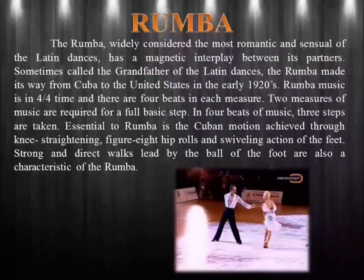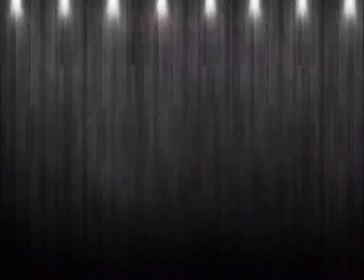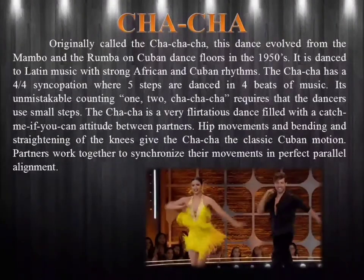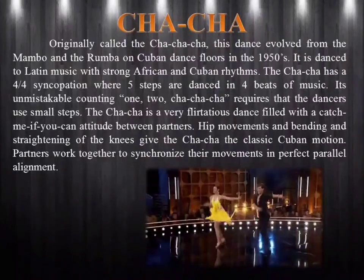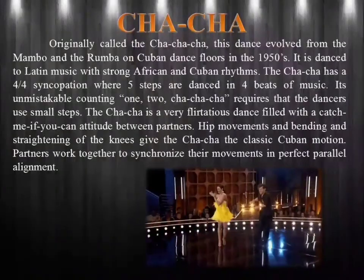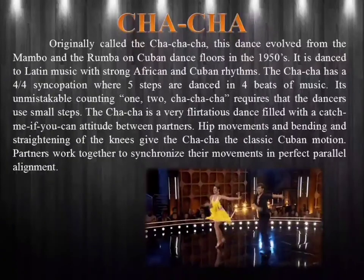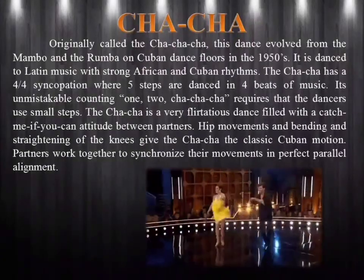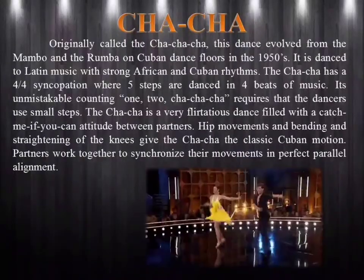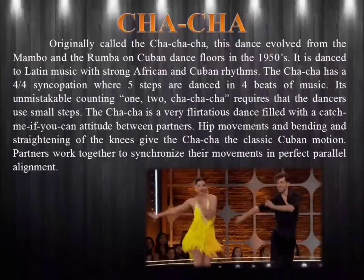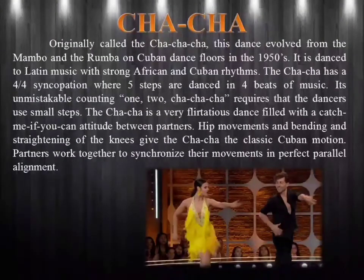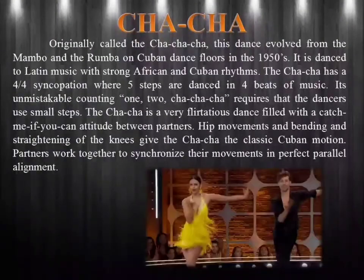Strong and direct walks led by the ball of the foot are also a characteristic of the rumba. Cha-cha. Originally called the cha-cha-cha, this dance evolved from the mambo and the rumba on Cuban dance floors in the 1950s. It is danced to Latin music with strong African and Cuban rhythms. The cha-cha has a four-four syncopation where five steps are danced in four beats of music. Its unmistakable counting — one, two, cha-cha-cha — requires that the dancers use small steps. The cha-cha is a very flirtatious dance filled with a catch-me-if-you-can attitude between partners. Hip movements and bending and straightening of the knees give the cha-cha the classic Cuban motion. Partners work together to synchronize their movements in perfect parallel alignment.